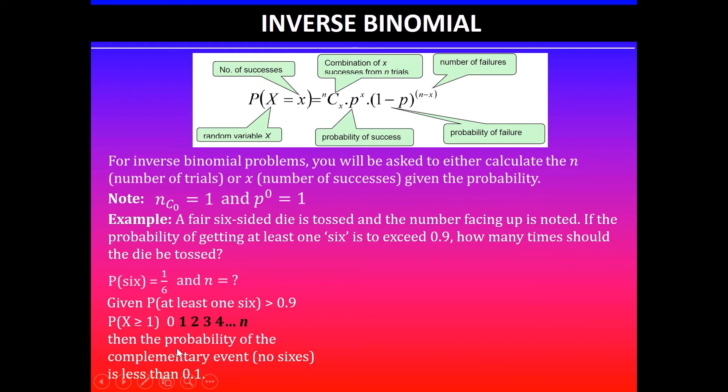So using complementary event, if at least 1 six is greater than 0.9, then no sixes will be less than 0.1. And then we can write that the probability when x is equal to 0 is less than 0.1. Now we already know the probability when x is 0.